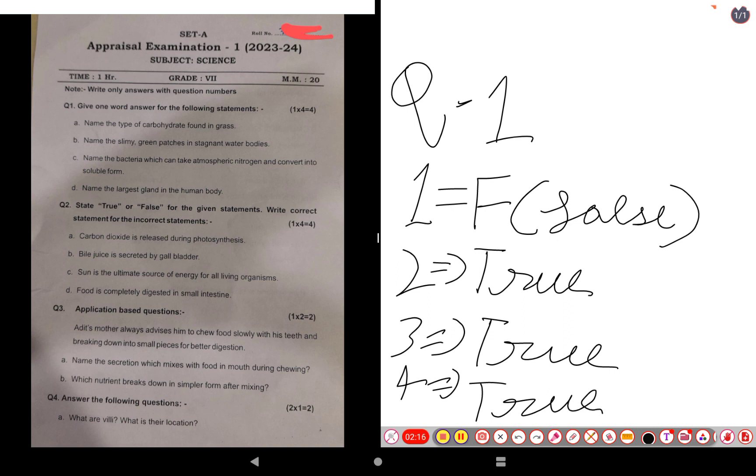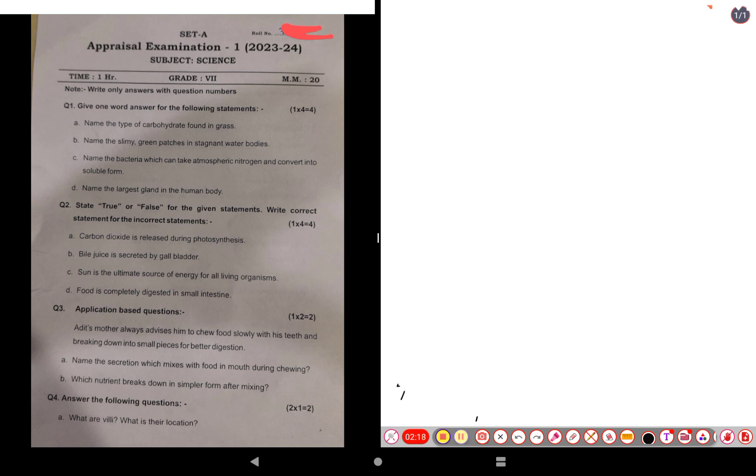Now let's move on to application based questions. Question three: Adit's mother always advises him to chew food slowly with his teeth and breaking it down into small pieces for better digestion. So let's now do the questions for this. Name the secretion which mixes with food during chewing. The answer for this is saliva.